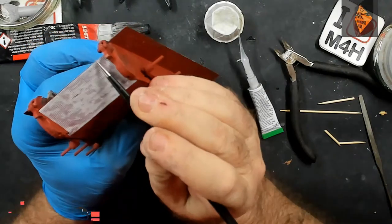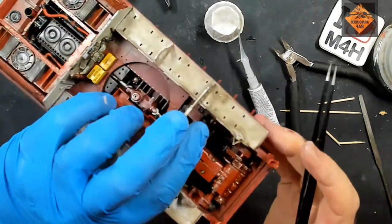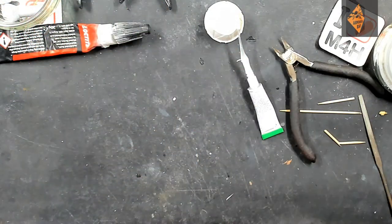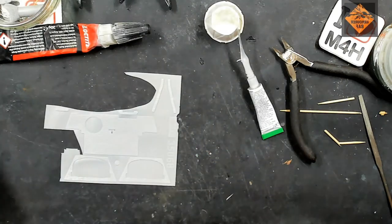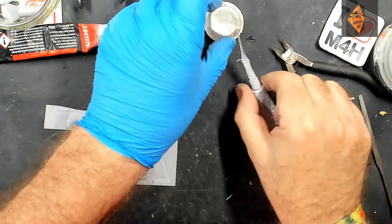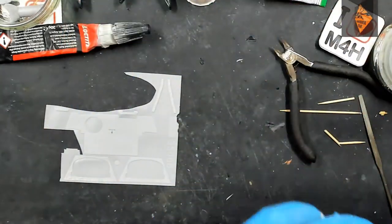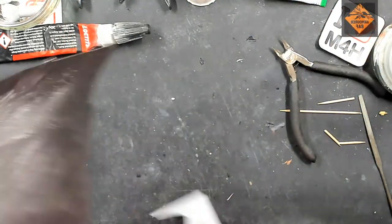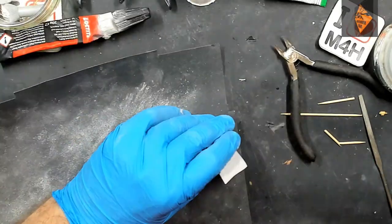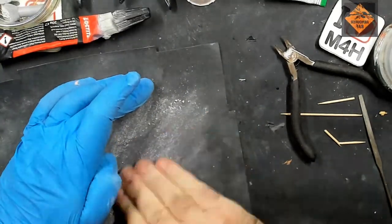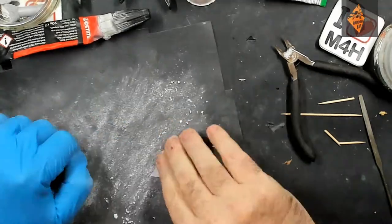There we go, that's the lower glacis done. But guess what? The turret isn't done. I forgot to do the part around the door, so let's crack on and get that bit sorted out.